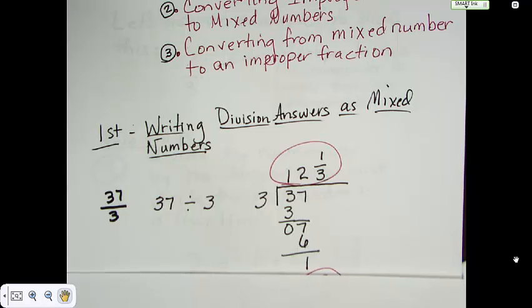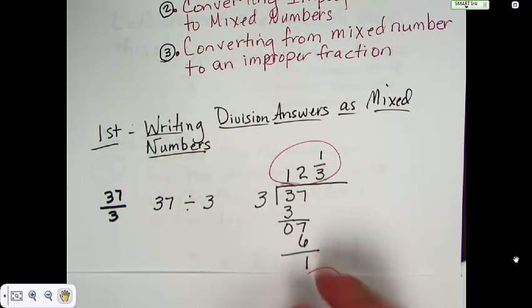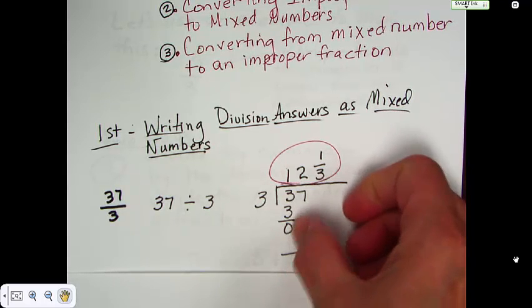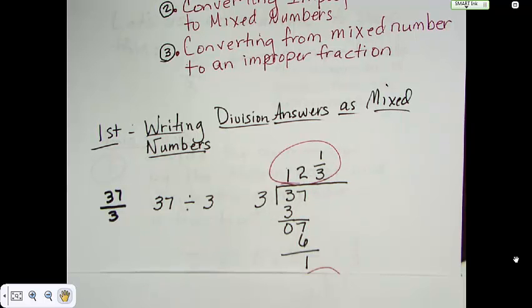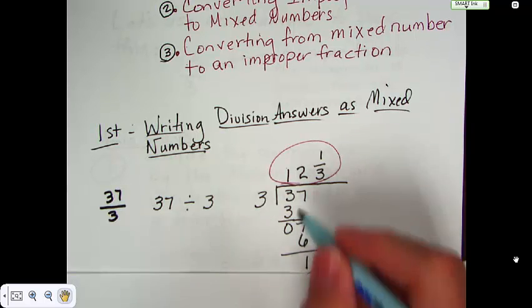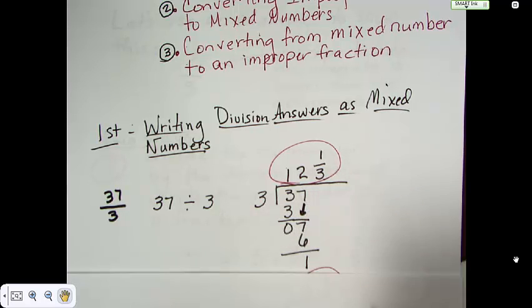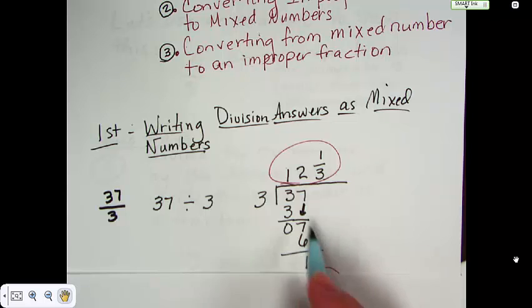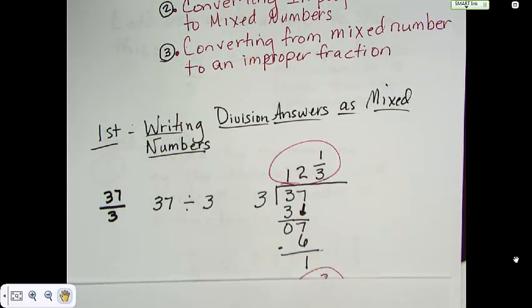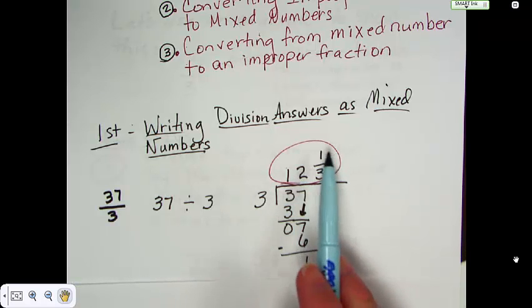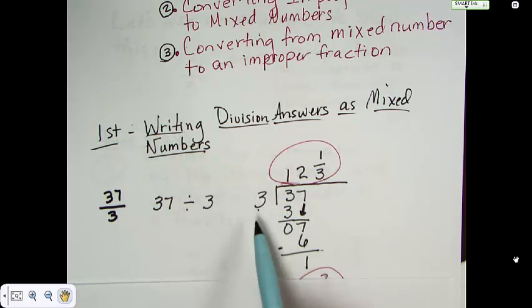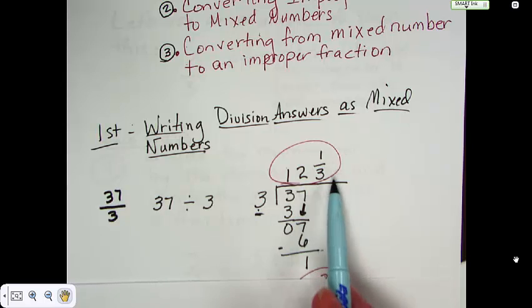So you have 3 goes into 3 one time and that's got a 0. Bring down a 7. And after you brought down that 7, then you go, okay, how many times does 3 go into 6? And that's 2 times. So you write your 6. You subtract again. And you're left with 1. Now, you could write it as 12 remainder 1. But we want to write it as a mixed number. So we're going to write it as 12 and 1 third. This number right here becomes your denominator.